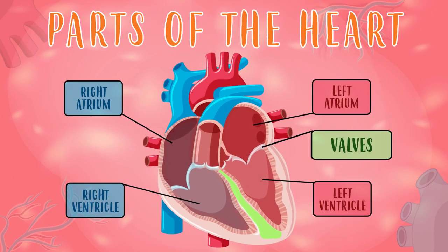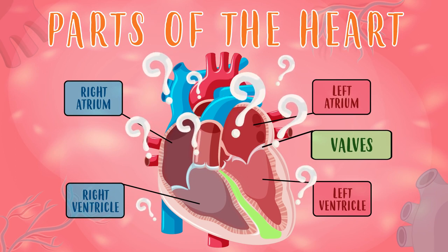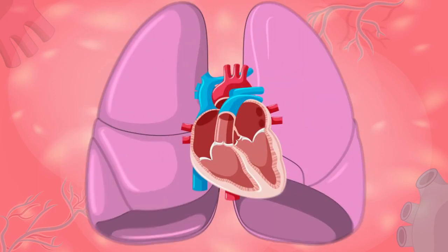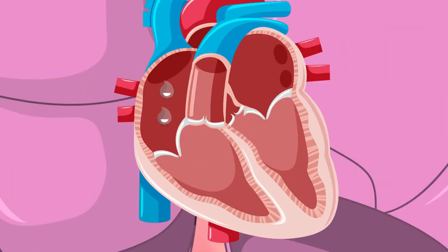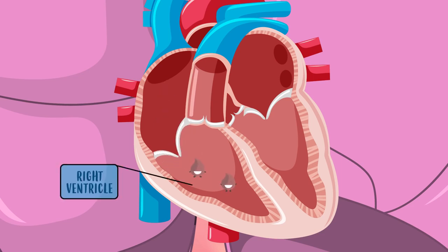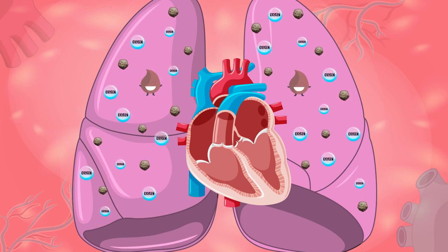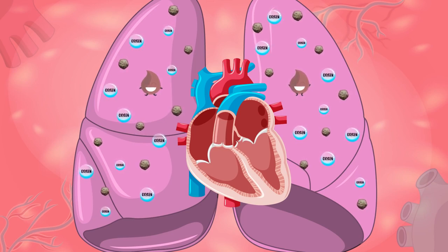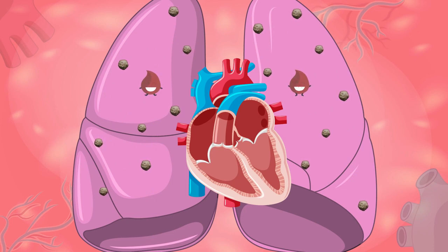Now we've got to know the most important parts of the heart. But do you know how it works? It all commences in the right atrium, where the deoxygenated blood — meaning it has very little oxygen and nutrients — enters the heart. Then it goes through the first valve, up to the right ventricle. Once it is here, the heart sends the blood directly to the lungs. And it's in this moment where the blood is oxygenated and filled with oxygen and nutrients.